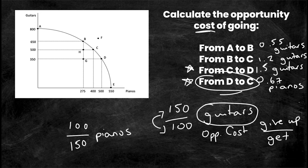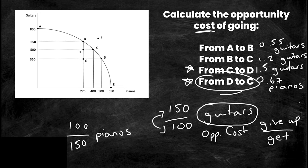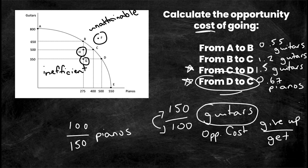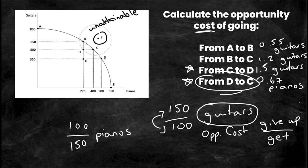There are also a couple of points not on the PPF worth noting: points F, G, and H. Point F is unattainable — it lies outside the PPF and requires resources you don't have. Points G and H are inside the PPF and are called inefficient. You could produce or consume at those points, but you'd always prefer to produce more and move closer to the PPF. Producing inside the PPF represents a deadweight loss. So: any point inside the PPF is inefficient, and any point outside is unattainable.